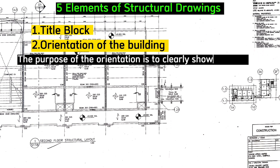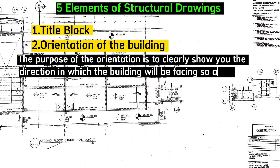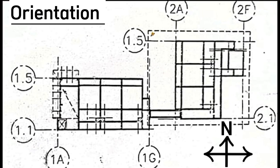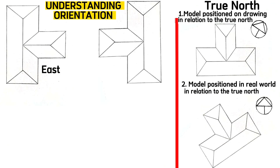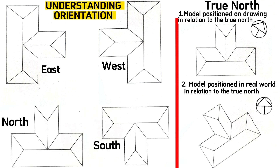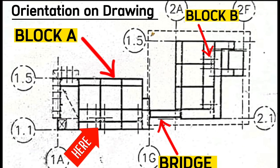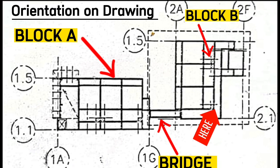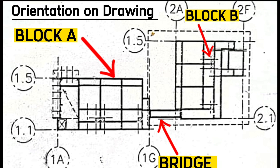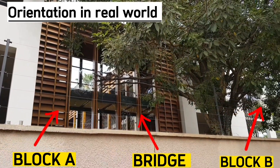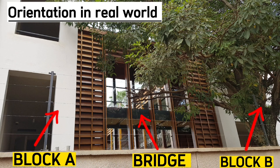The purpose of the orientation is to clearly show you the direction in which the building will be facing, so as to perform actual construction tasks and correct positioning. You will be able to set out the building facing the eastern, western, or northern direction with the help of the orientation on the blueprint — you will follow the true north. For example, for this project, this was block A positioned exactly here, this is block B, and this is the bridge that provides easy access between block A and block B, and that's exactly how we did it on the ground.